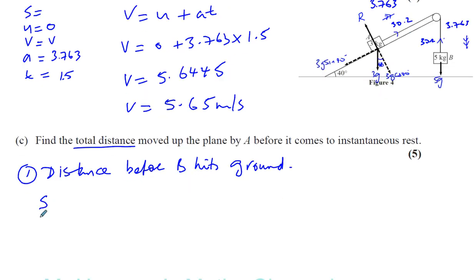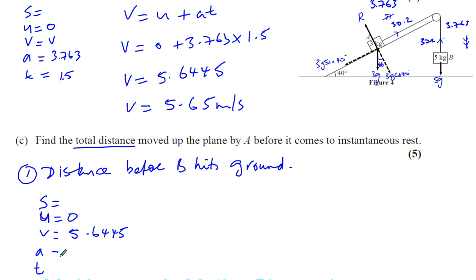Before B hits the ground, we're going to again use SUVAT. We have to find the distance S. We know the initial velocity was zero — that's when it was released from rest. The final velocity is going to be the same velocity that B was travelling when it hit the ground, because they're connected particles moving at the same speed. So V will be 5.6445. The acceleration is, of course, the same acceleration as before when the string is tight: 3.763. And the time is the same: 1.5 seconds. So we need to find S.